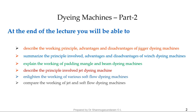Summarize the principle involved, advantages and disadvantages of Winch Dyeing Machine. Explain the working of Padding Mangle and Beam Dyeing Machines. Describe the principle involved in Jet Dyeing Machine. Enlighten the working of various Soft Flow Dyeing Machines. Compare the working of Jet and Soft Flow Dyeing Machines.